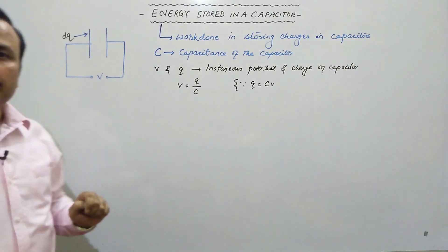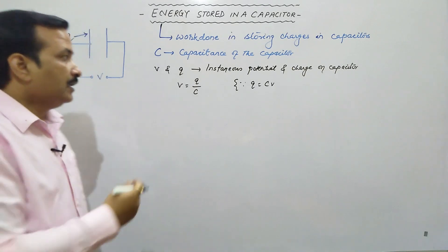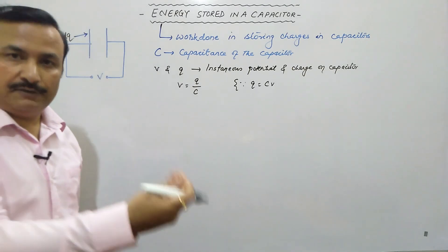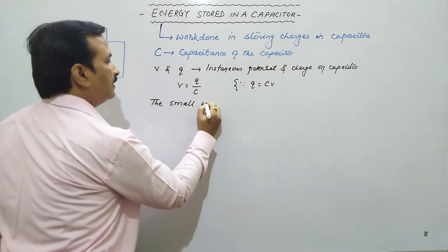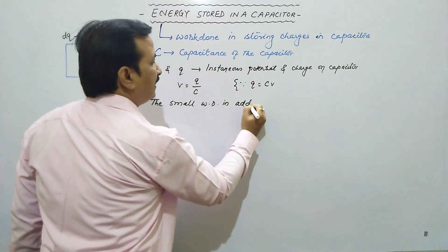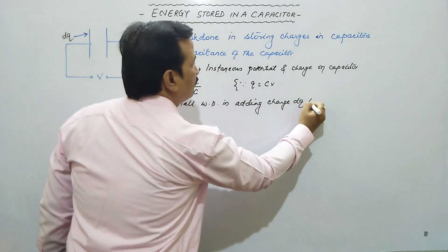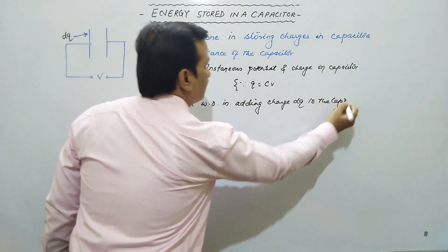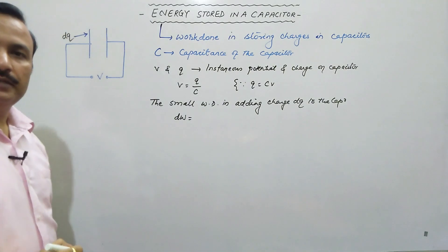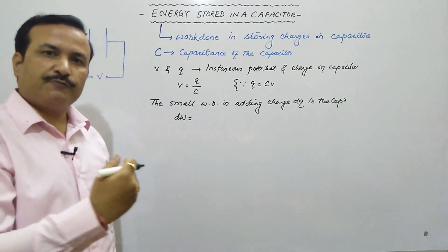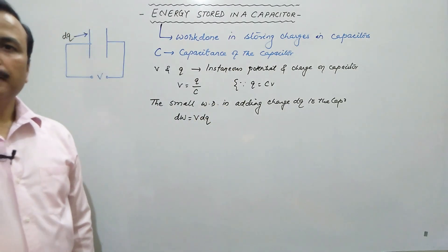Now when we want to add DQ charge, as I said there will be repulsion, so against that we have to do work to add it. So that work done we will be calculating. The small amount of work done in adding charge DQ to the capacitor will be DW is equal to VDQ. From the formula, potential is work upon charge, so work will be potential into charge.